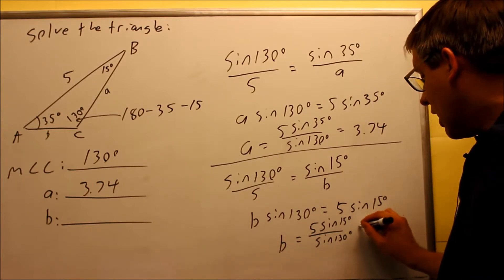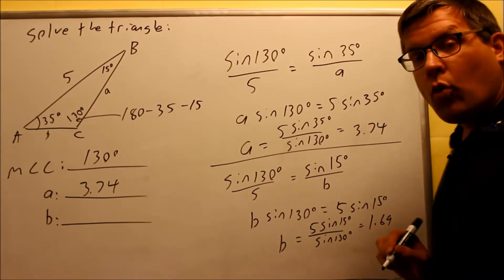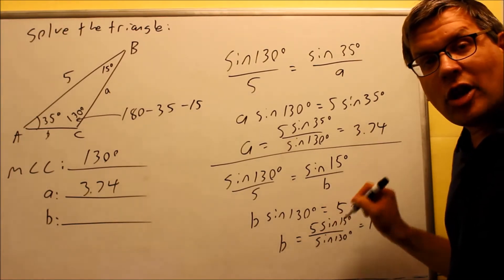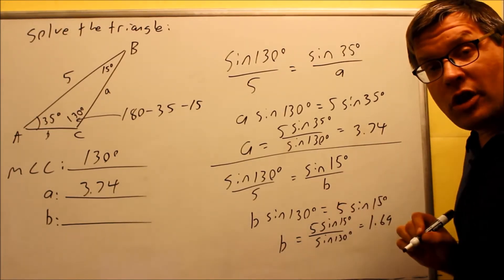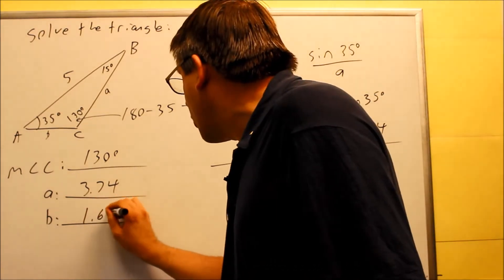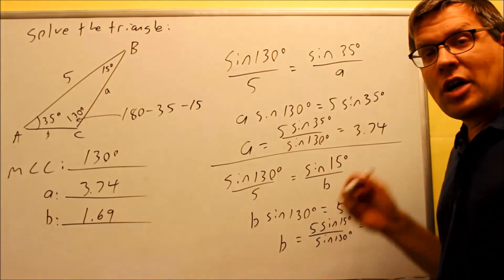Divide both sides by sine 130 and you get 5 sine 15 degrees divided by sine 130. If you put this into the calculator, you're going to get 1.69 as your answer. You always want to verify to make sure that you know how to put that into your calculator, but that's the value that you should get here. So 1.69 is going to be side b.